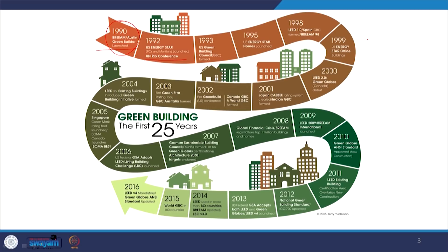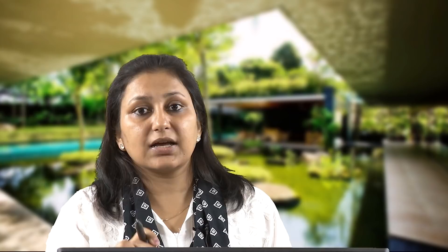In 1999 further variations to the star-rated programs from the US came out — Energy Star Office followed Energy Star for homes. In 2000 the second version of LEED came out, emphasizing that green building practice is changing with time and revised versions were required. In 2001 Japan created its own rating system, CASBEE, and the Indian Green Building Council (IGBC) was formed. IGBC was initiated in 2001, the same year when the first green building project of India — the CII Sohrabji Center in Hyderabad — was also started.